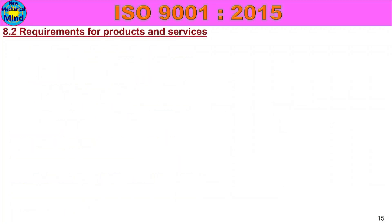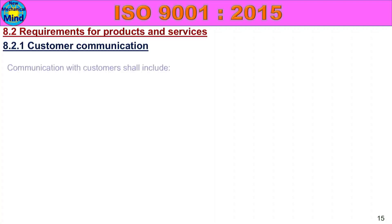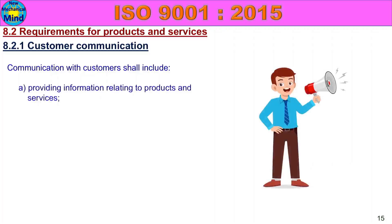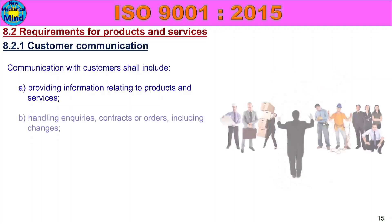Next, 8.2 Requirements for Products and Services. This is the first additional subclass. 8.2.1 Customer Communication. Communication with customers shall include providing information relating to products and services, and handling enquiries, contracts or orders, including changes.